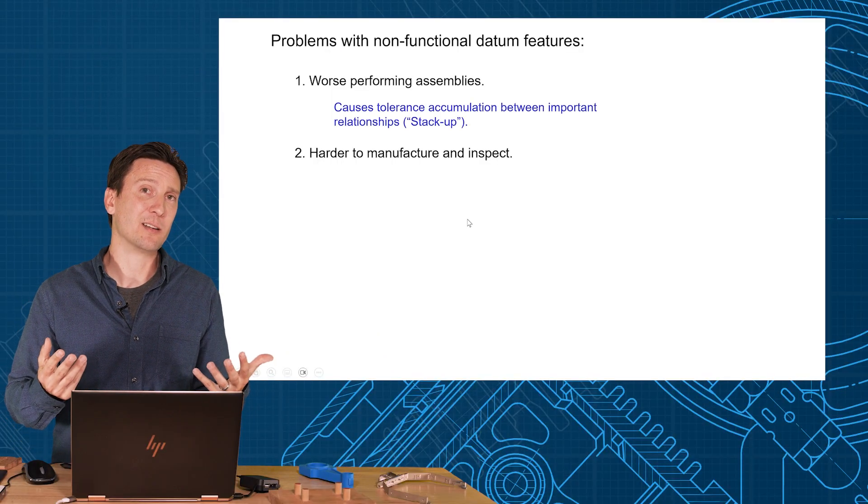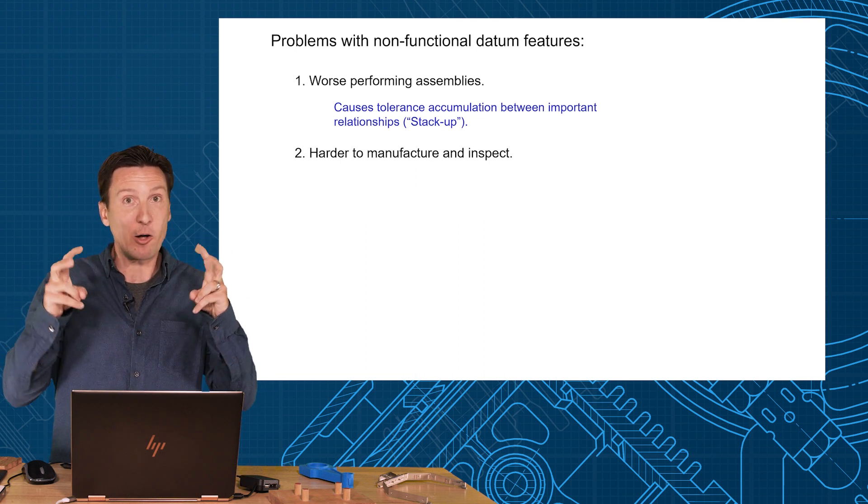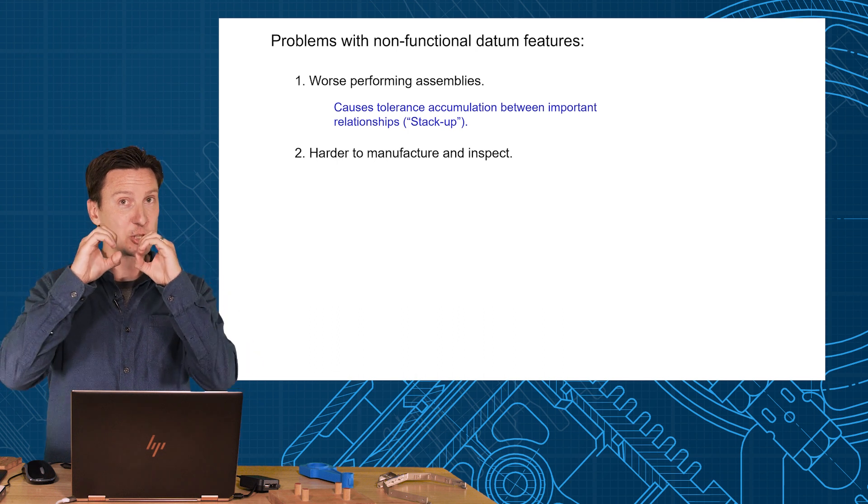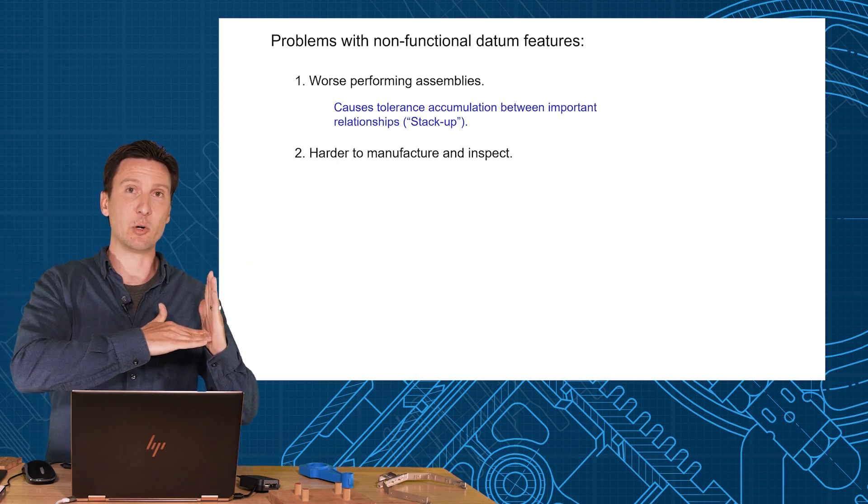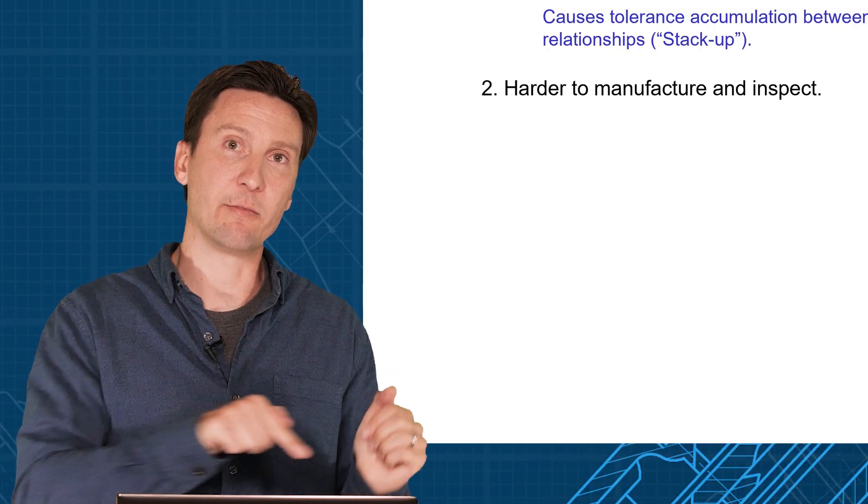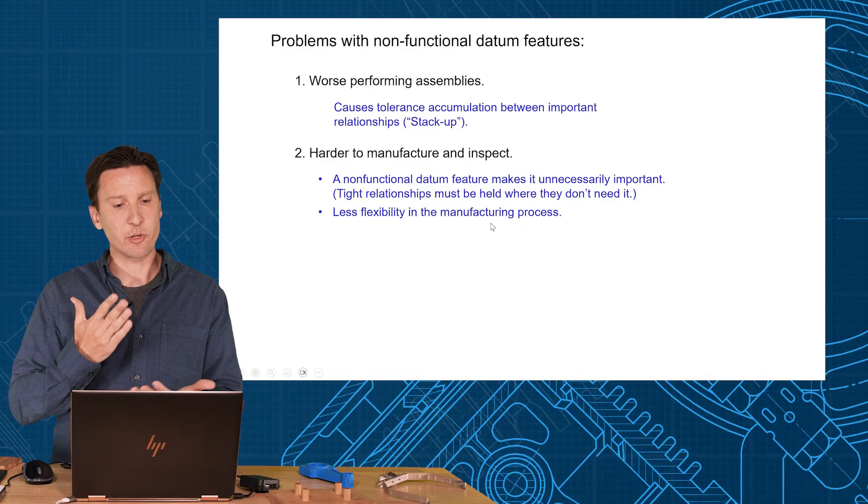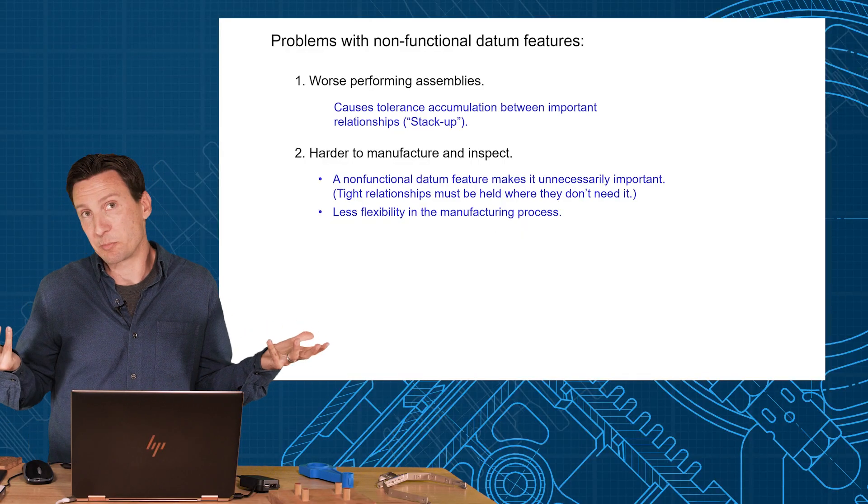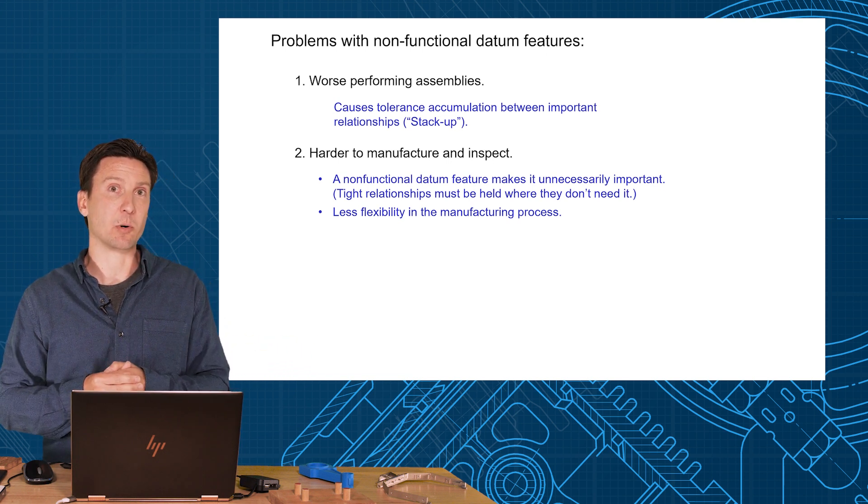They're harder to manufacture and inspect because you've gone off some non-functional datum features. You've made that non-functional thing important when it really didn't need to be. If you just needed a relationship of those two holes to those alignment hole and slot, let's say that and get that middle man, the edges, out of there. We can give those a very loose profile tolerance of plus or minus five and make it not matter. So those non-functional datum features can make it unnecessarily important. Tight relationships are held when you don't really need it and it gives you a little less flexibility in the manufacturing process.